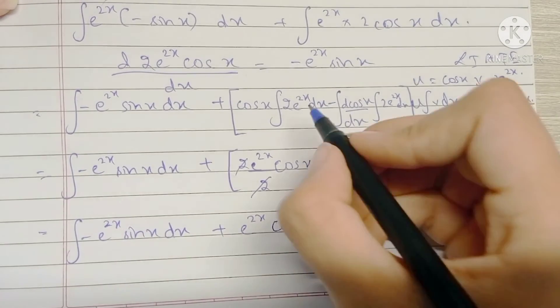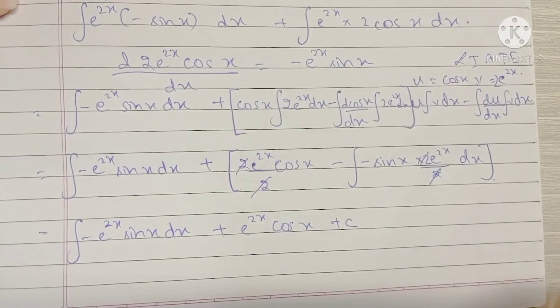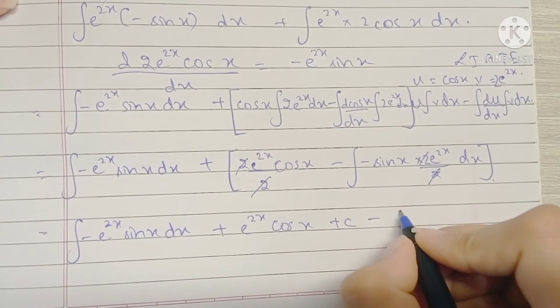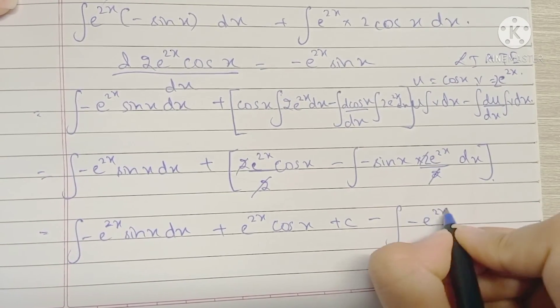We get the plus c from integrating this term right here and this is minus the integral of minus e raised to 2x sin x.